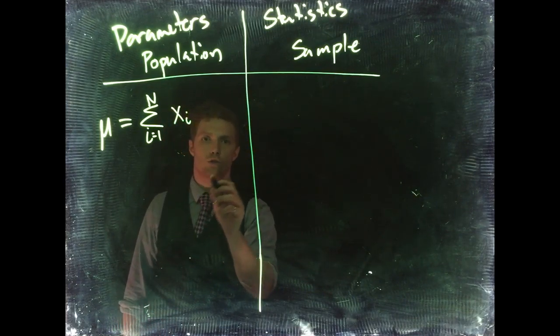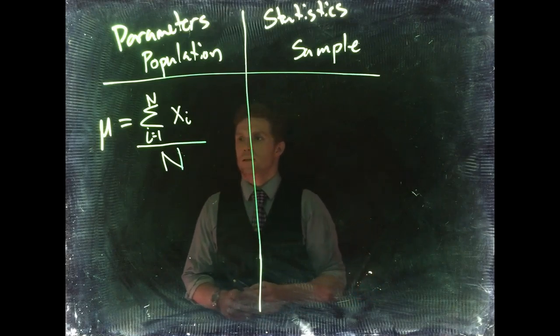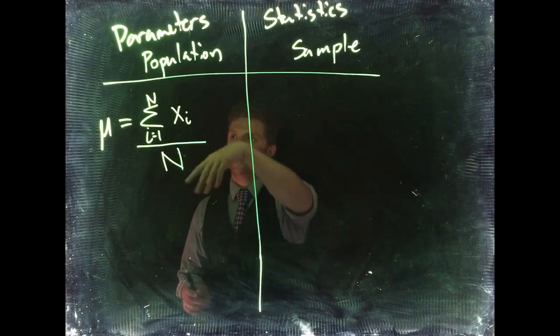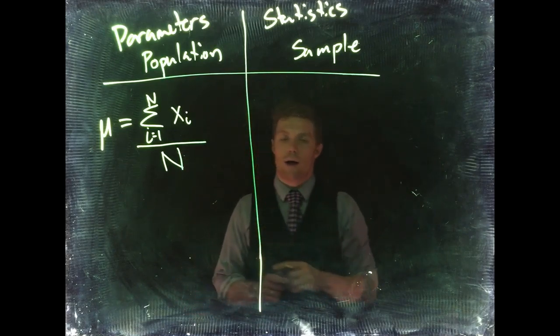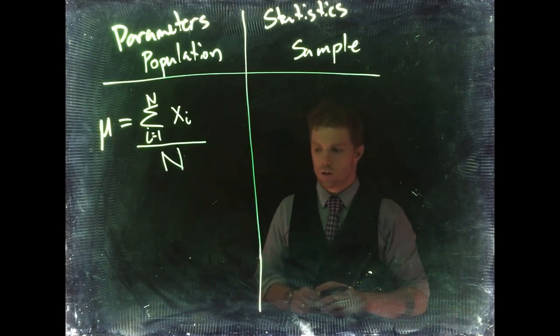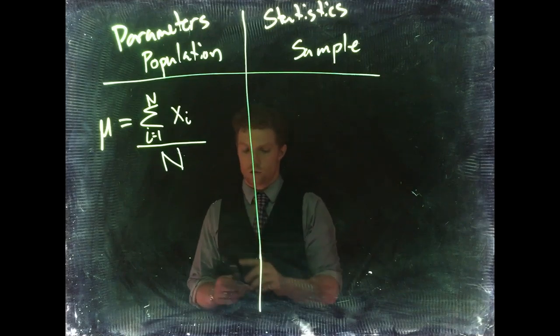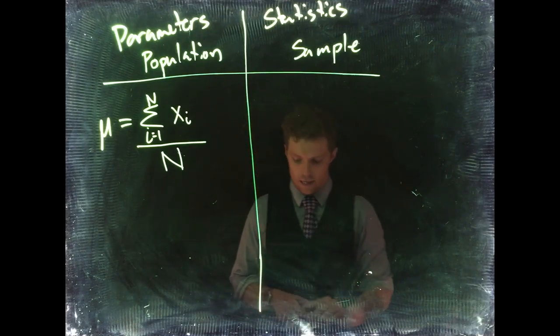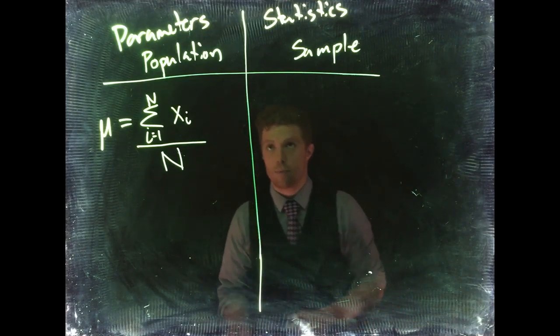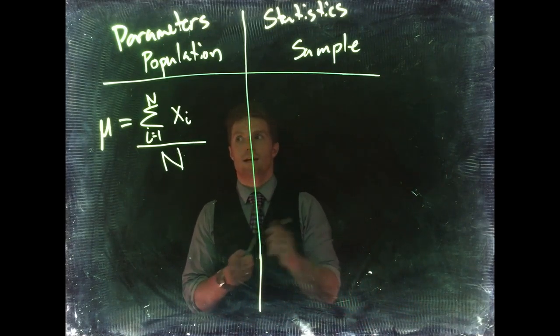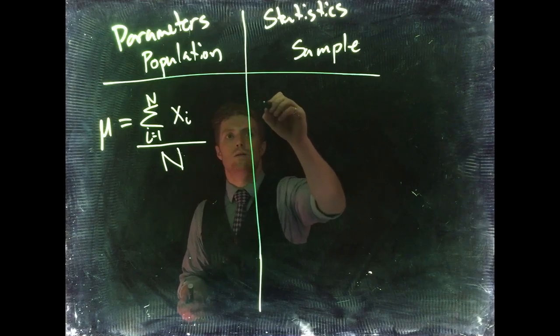From your first tree all the way to every single tree at the end, this would be x sub i — your individual tree measurement, tree height — divided by the total population size N. So that should be pretty straightforward.